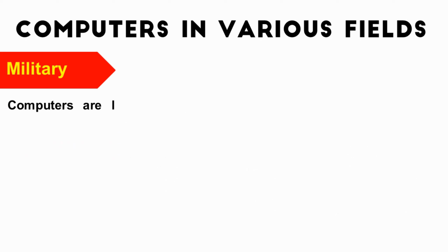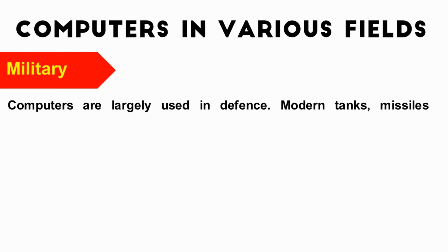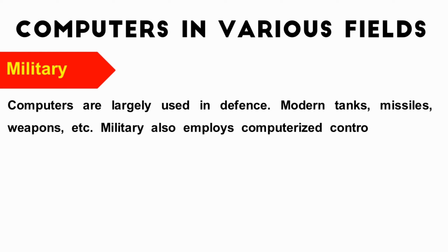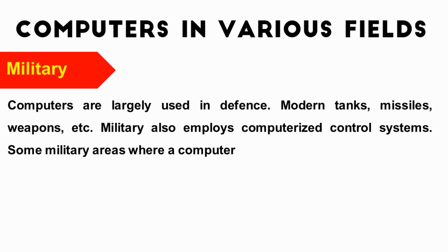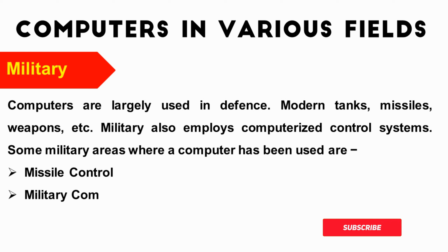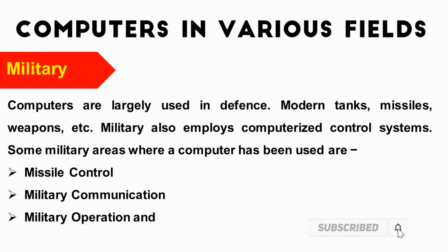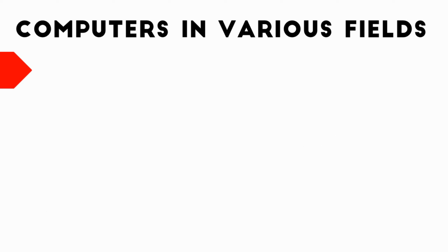Computers are largely used in defense — in modern tanks, missiles, and weapons. The military also employs computerized control systems. Some military areas where computers are used include missile control, military communication, military operations planning, and smart weapons.